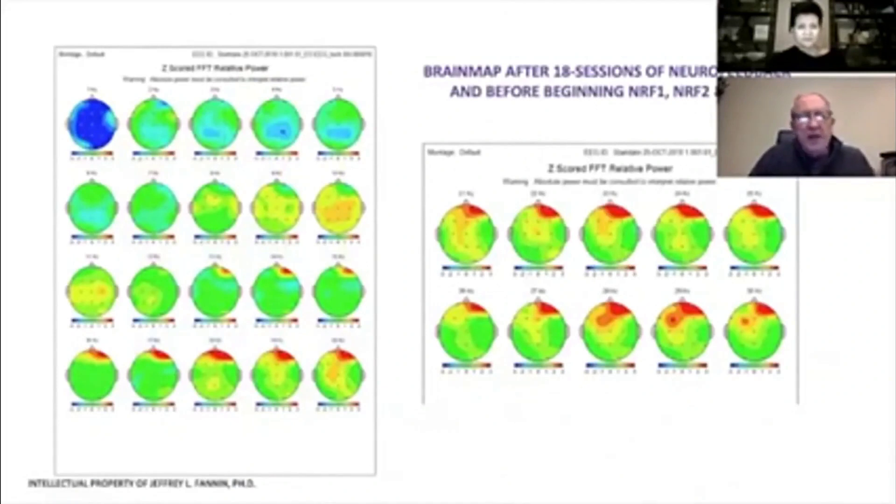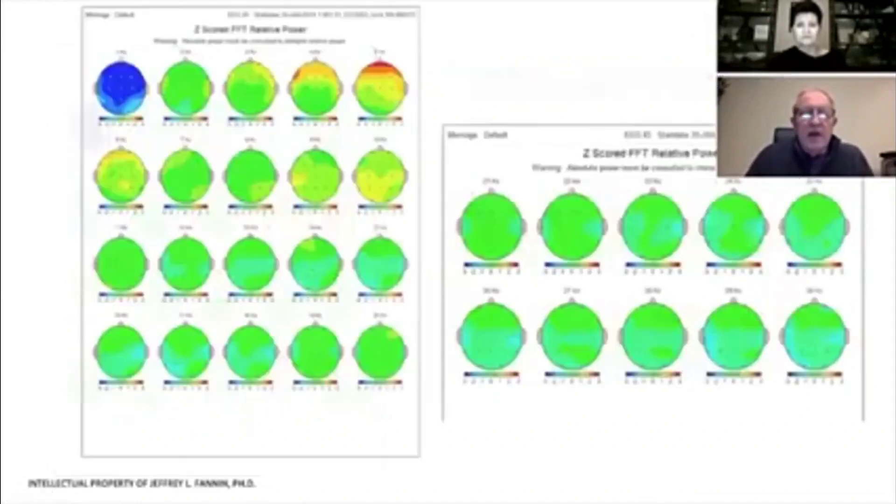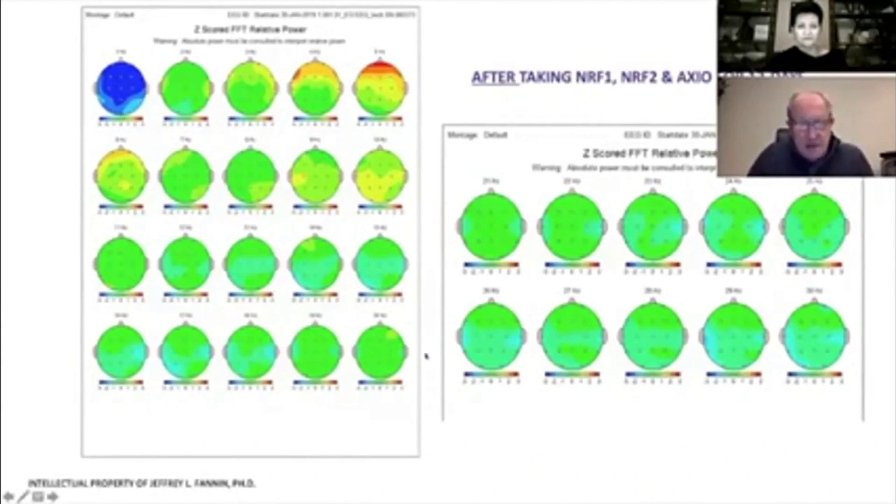Here is our guy after 18 sessions of neurofeedback. You don't have to be a neuroscientist to begin to interpret this. You look at the red and we know that that's three standard deviations above normal. This is his thinking activity, his beta activity. After taking this for 12 days, we did another brain map, and all of the green means it's normal EEG.